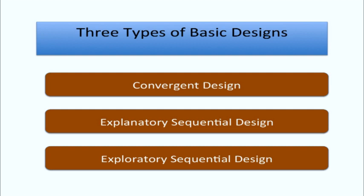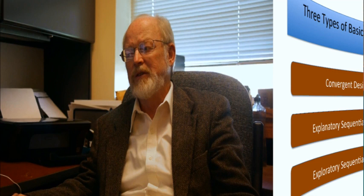The three basic designs are: a convergent design — these names are very intentional. Convergent means we're going to be merging two databases. Explanatory sequential means we're going to sequentially connect the qualitative and quantitative databases and have the second database help explain the first. And then exploratory, which is just the reverse of explanatory — we're going to start qualitatively and build something quantitatively through the second database. We call that an exploratory sequential design.